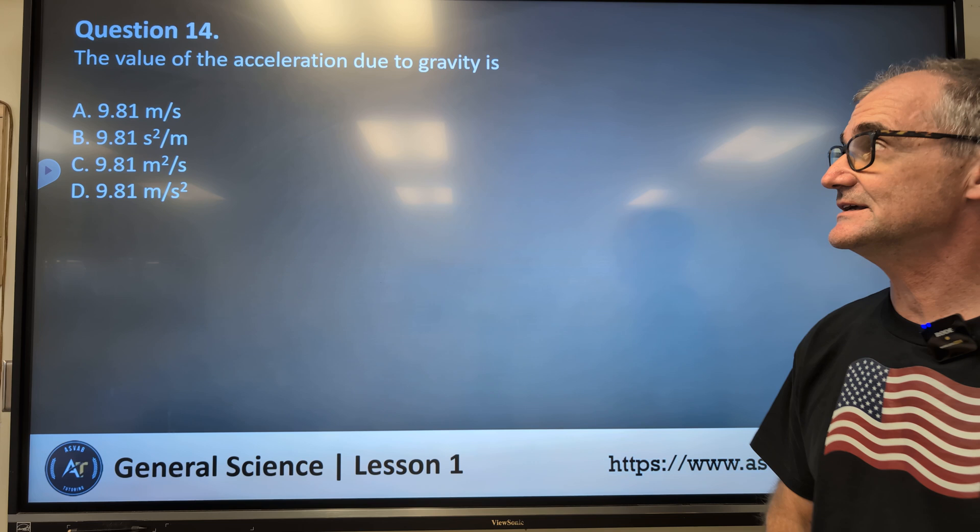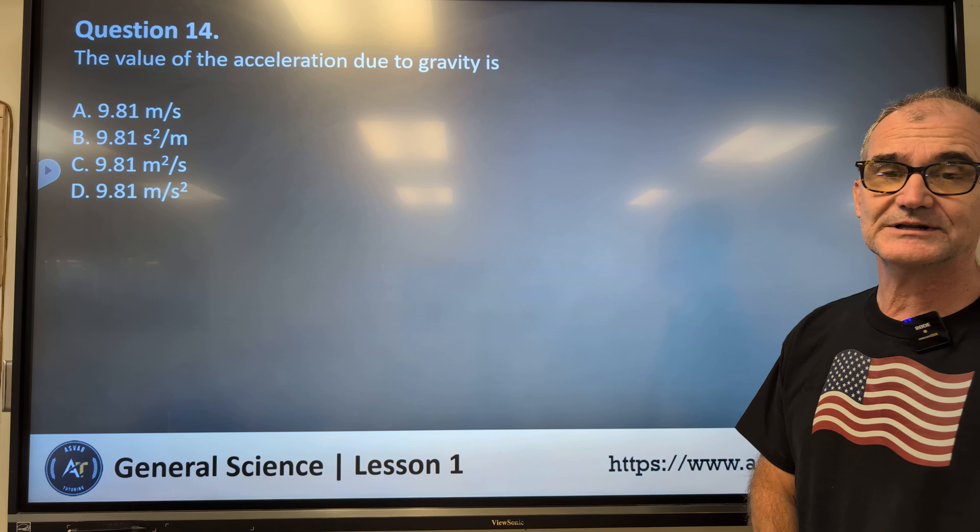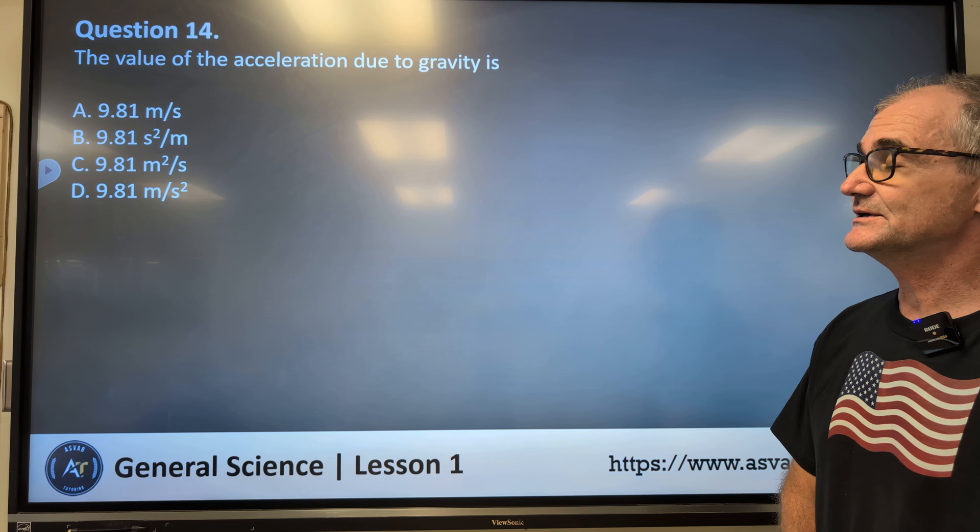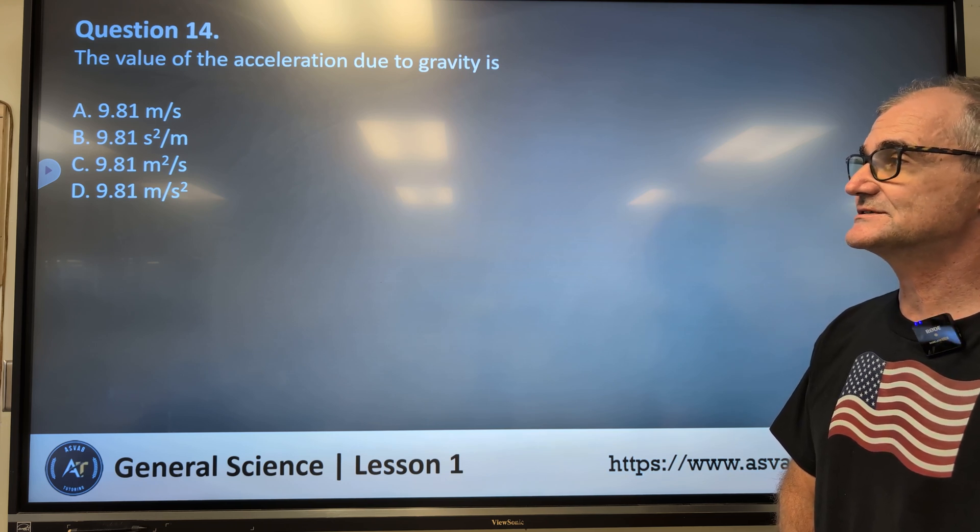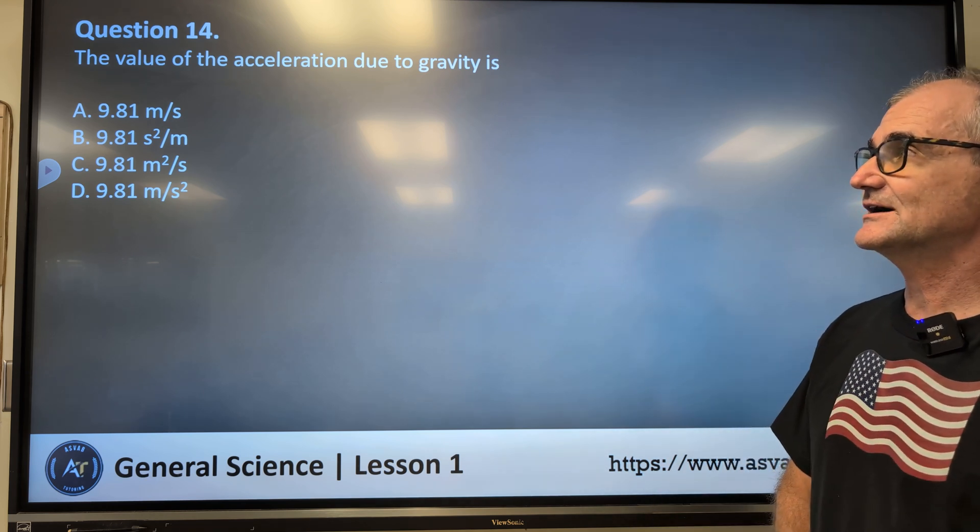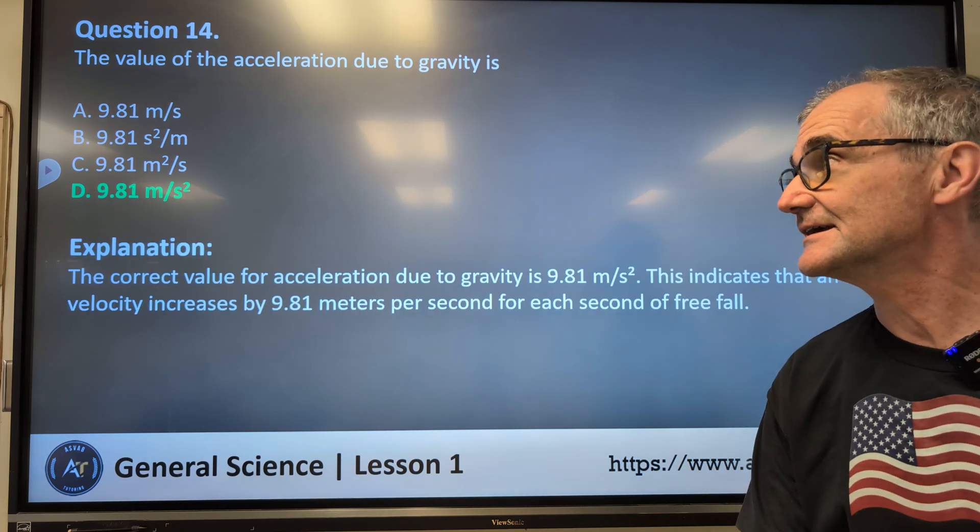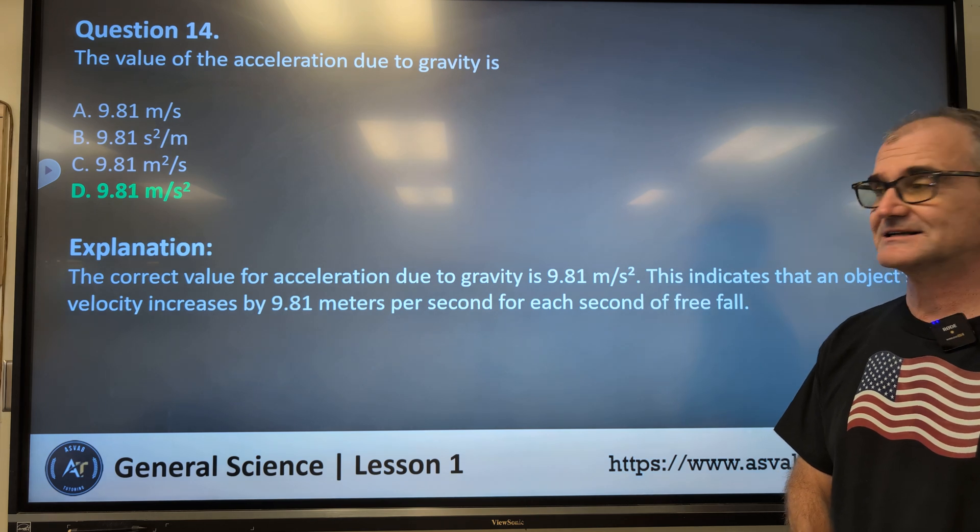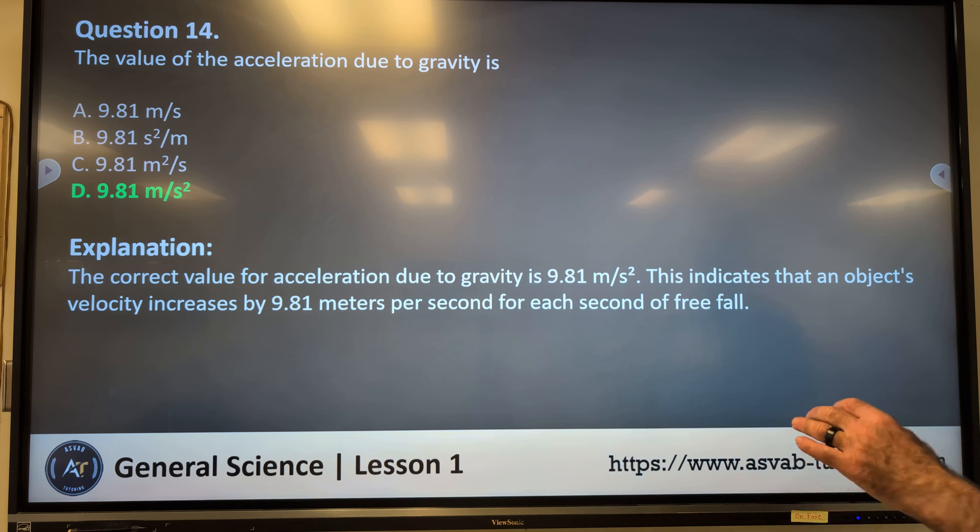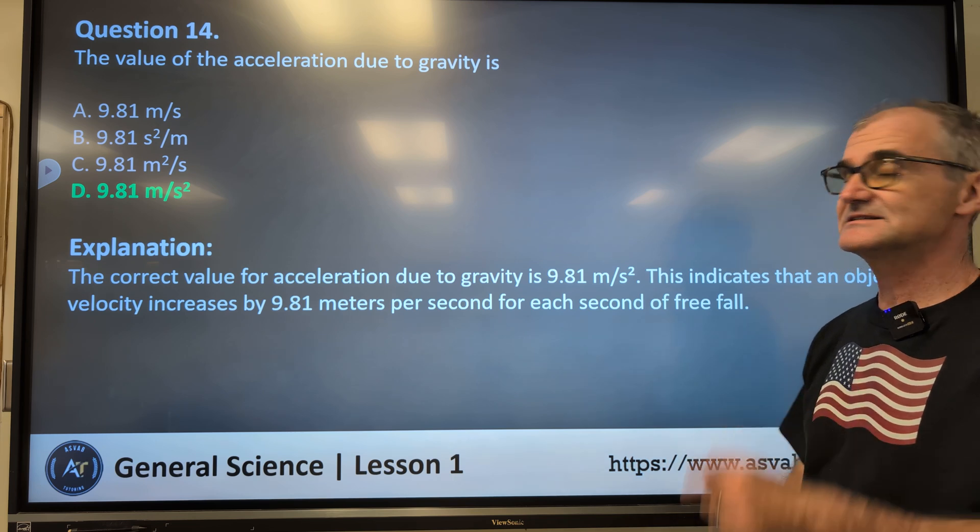Practice problem number 14. The value of the acceleration due to gravity is A, 9.81 meters per second, B, 9.81 second squared per meters, C, 9.81 meters squared per second. So they're all the same value. The question is, do you know the correct units for acceleration? Pause the video, figure it out. The correct answer is meters per second squared. Answer D, gravity is 9.8 meters per second squared. This indicates that an object's velocity increases by 9.8 meters per second for each second of free fall.